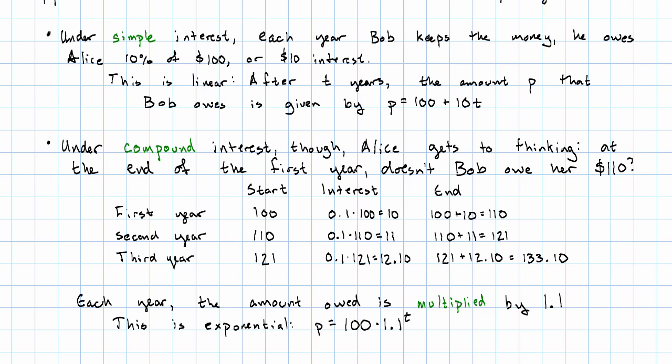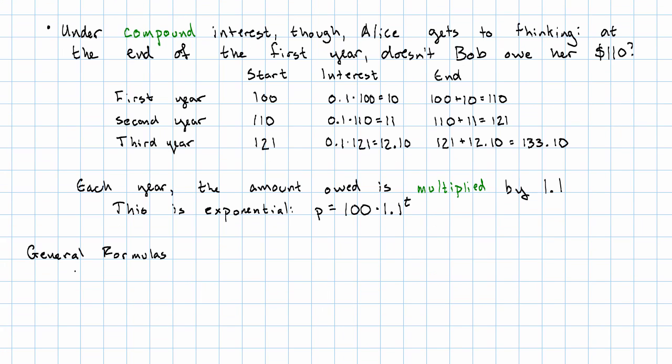So the general formulas for simple interest, that's the amount owed is the amount we start with, plus the amount we start with times the interest rate times the time. This product gives us our rate of change. For compound interest, the amount we owe is the amount we started with, times 1 plus the interest rate to the t power.